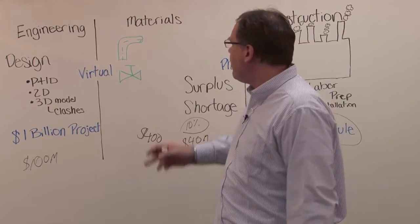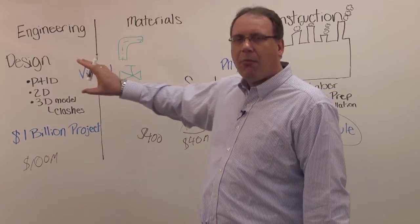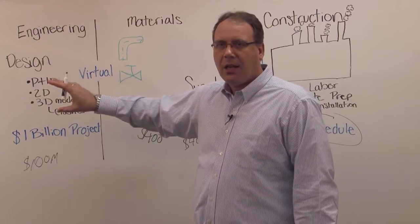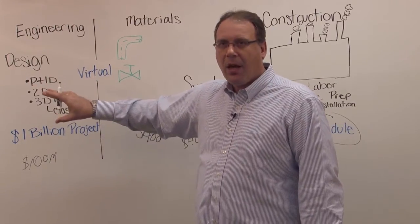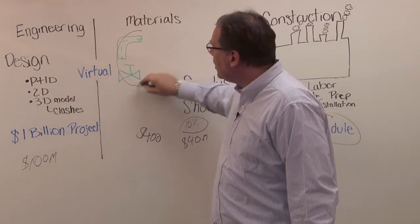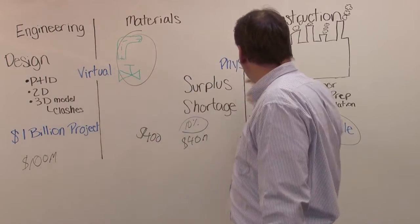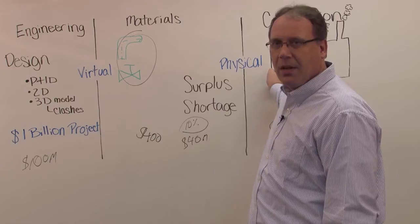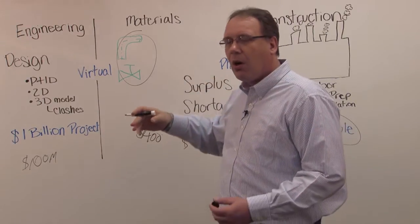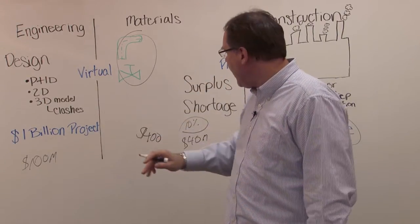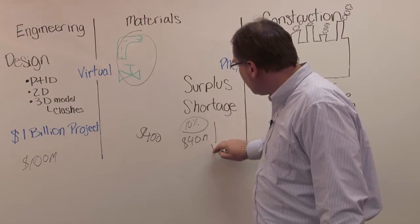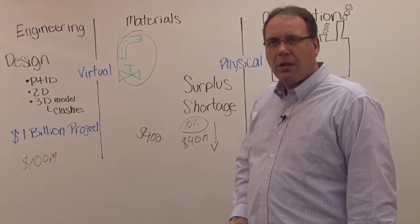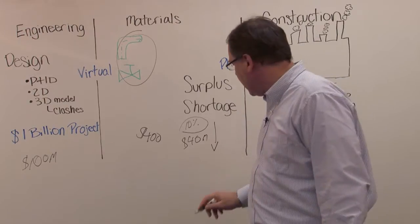What materials management does is basically comparing, always instantly, how much do I have in the model, how much have I bought, how much do I need tomorrow. And it's comparing this all the time. And then based on this, you know I need this now, you are able to reduce your surplus perhaps to 5%.